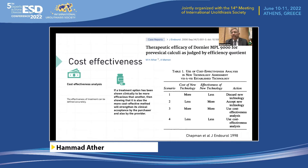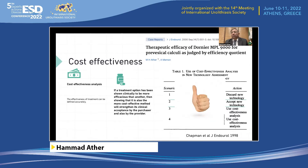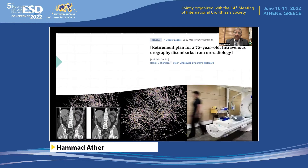The important thing is to determine the cost-effectiveness of a new treatment. If the cost of the new technology is less and the effectiveness of the new technology is more, there is no doubt that it should be incorporated into the armamentarium, even for low and middle income countries where there are issues with resources.